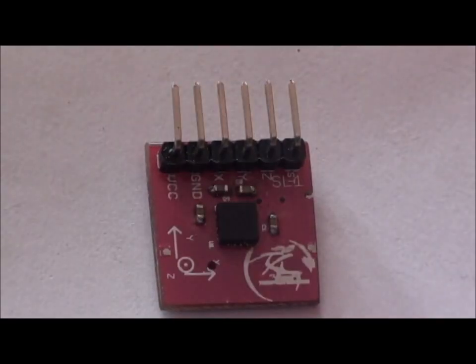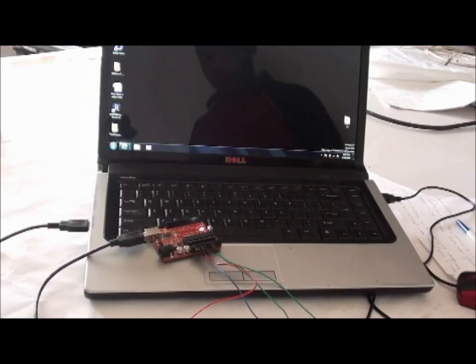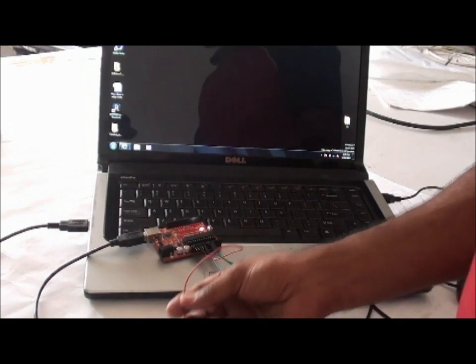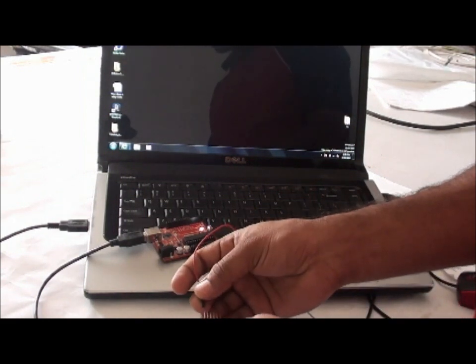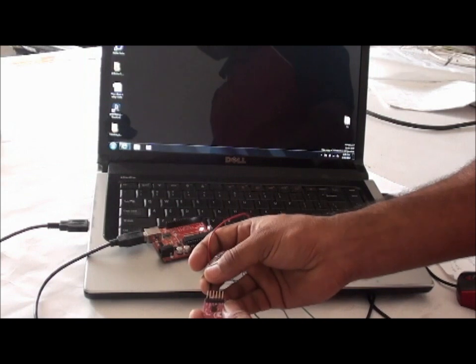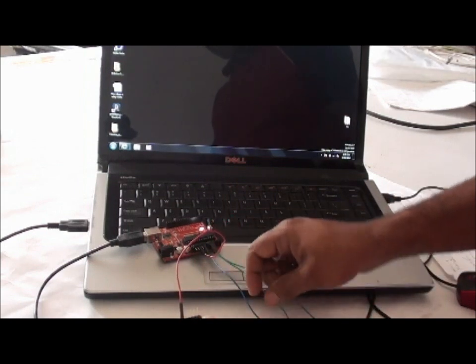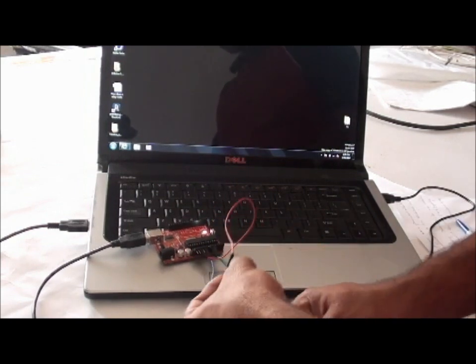Now let us look at a demo with Arduino board. This is the 5V supply from Arduino. This pin goes to accelerometer VCC and this one is ground from Arduino.